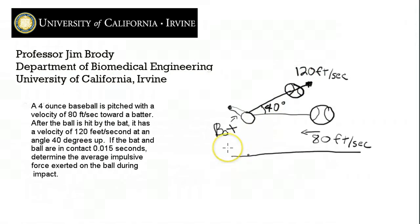So how are we going to solve this? Well, first let's write down the principle of impulse and momentum. And what that is, is we've got the initial momentum, that's the mass times the velocity, plus the impulse.